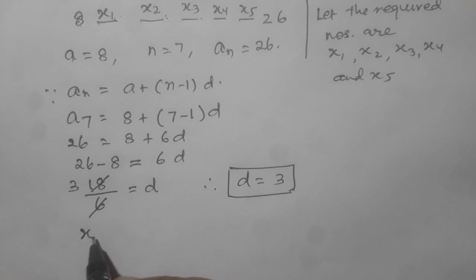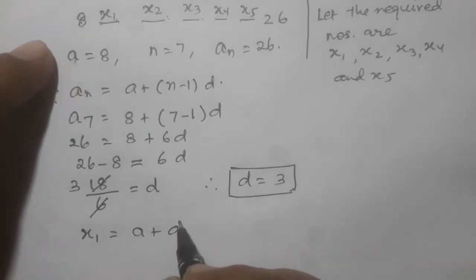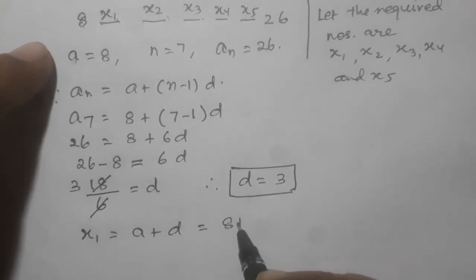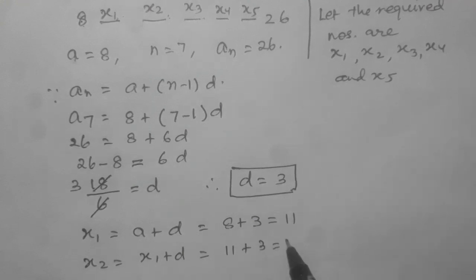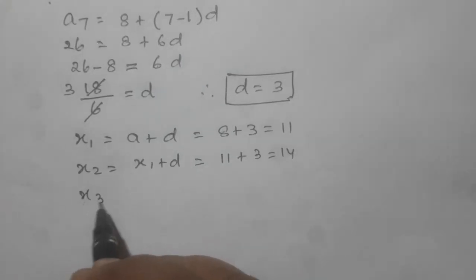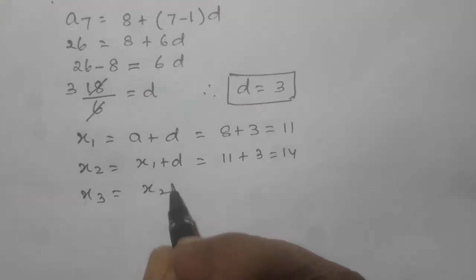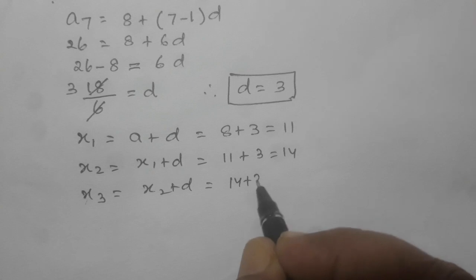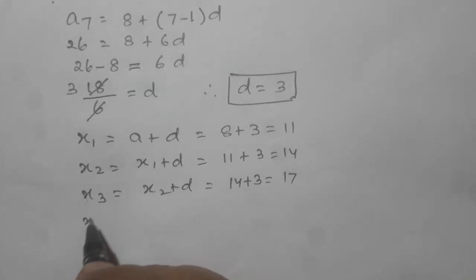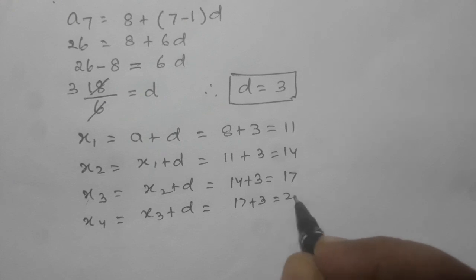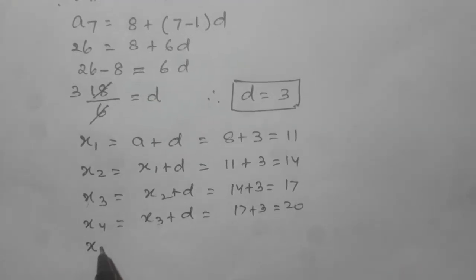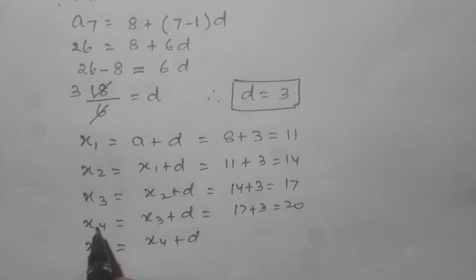Now x1 will be a plus d, means 8 plus d is equal to 3, is equal to 11. x2 will be x1 plus d, x1 is equal to 11 plus 3 is equal to 14. x3 will be x2 plus d, x3 is equal to 17. x4 will be x3 plus d, x3 is 17 plus 3 is equal to 20. x5 will be x4 plus d, x4 is 20, so it will be 20 plus 3 is equal to 23.